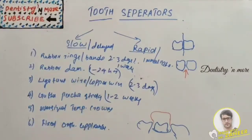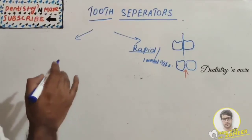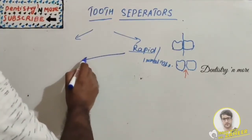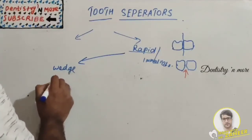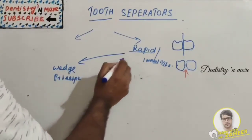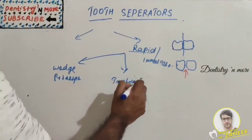Now let's move on to rapid separation. In rapid separation, tooth movement is achieved very rapidly over a very short period of time. It is achieved by basically two methods: the first one is the wedge principle and then the traction principle.